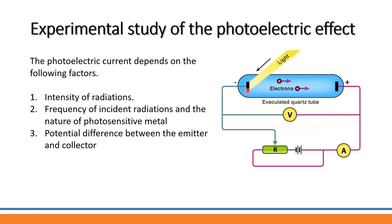This is a negatively charged plate called the emitter, and this is a positively charged plate called the collector — also called the photoelectric plate. The collector is positive and the electrons are negative, so the electrons are attracted to the collector plate.